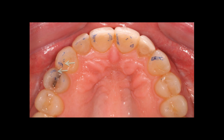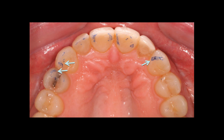And here's how it worked out. You can see we split the function on the right side between number five and six. And on the left side we're able to utilize the maxillary canine. I hope you found this information informative and helpful for when you're diagnosing and treatment planning your restorative cases. This is Dr. Brian Mills from Mountain View, California — thanks for watching.